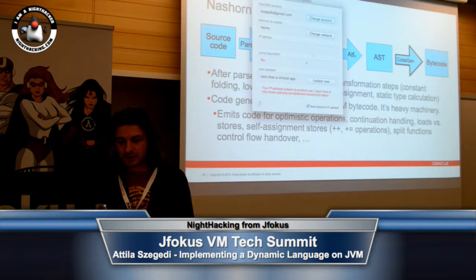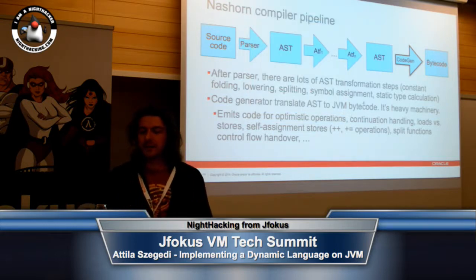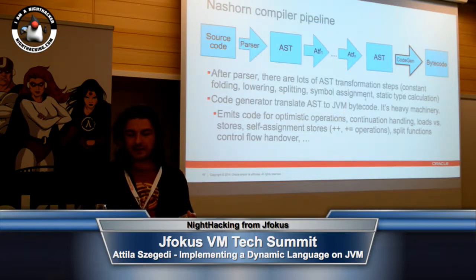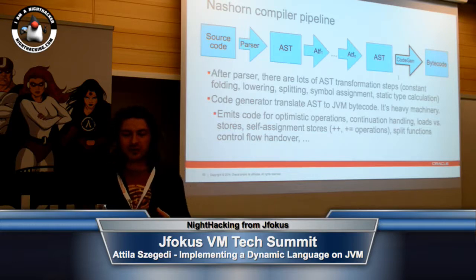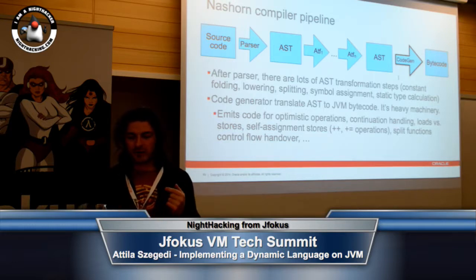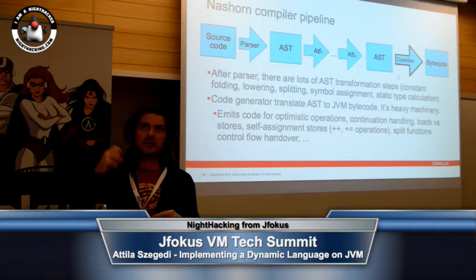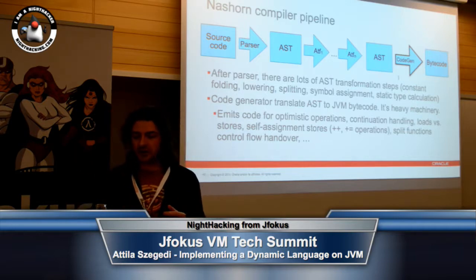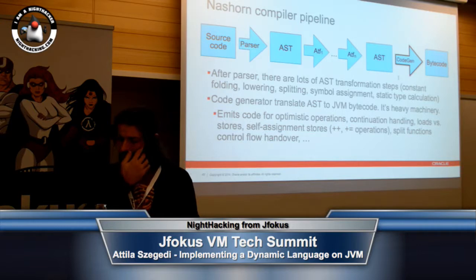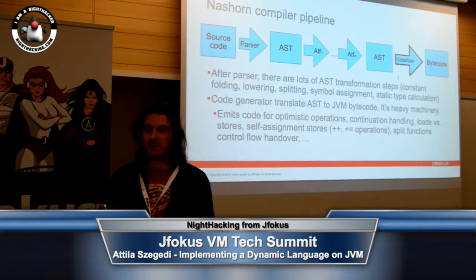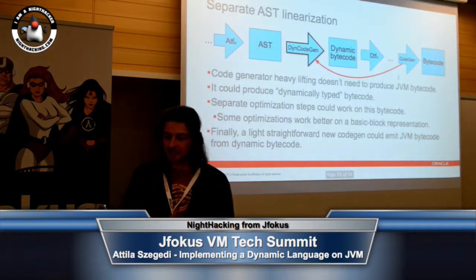In the end, we have the code gen, which as you can see is a bolder arrow, which translates all of that to JVM bytecode. It's heavy machinery because all the logic for optimistic operations, continuation handling, emitting code for continuation, self-assignment stores, and control flow handover for split functions are all in that one class. It's a big class and I'm not happy about that. However, in order to do something about it, we have this idea to produce a dynamically typed bytecode, which is another intermediate representation, and basically move most of what code gen does today into this dynamic code gen, which at the very least would look much like bytecode but doesn't really have explicit types when it starts out.